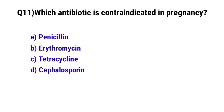Question No. 11. Which antibiotic is contraindicated in pregnancy? The correct option is C: Tetracycline.